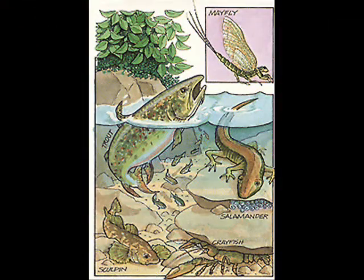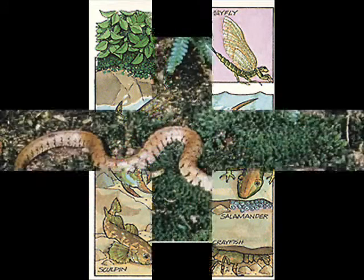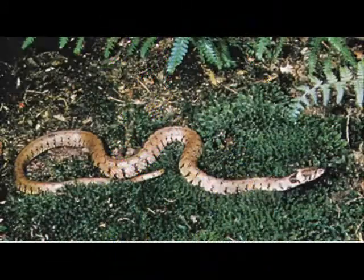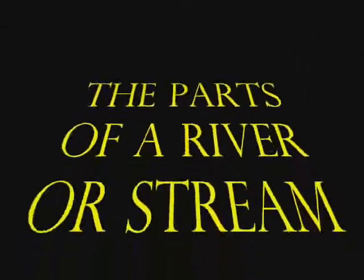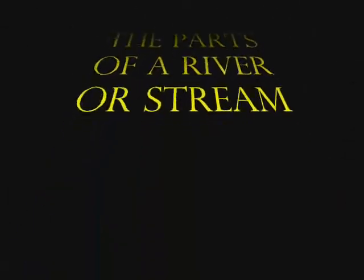The animals mainly found in a river or stream habitat are water animals such as fish, crayfish, salamanders, water snakes, mussels, and clams.